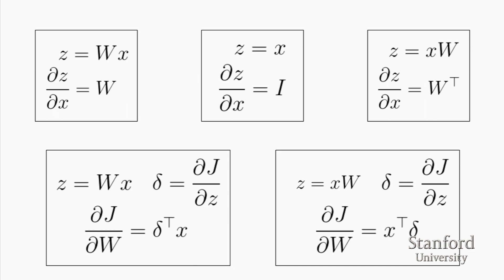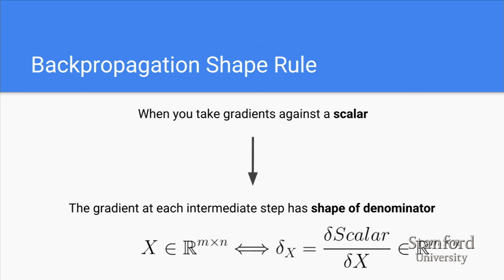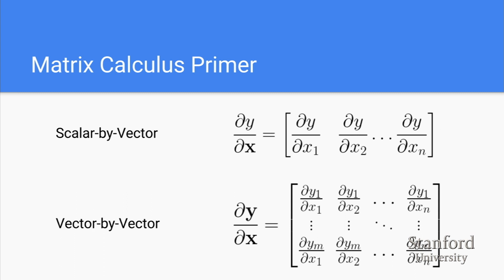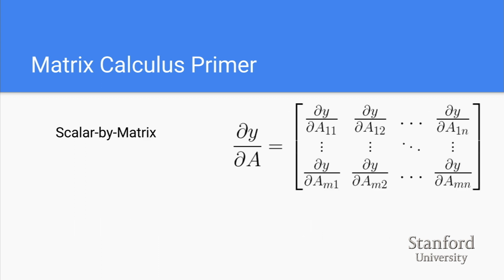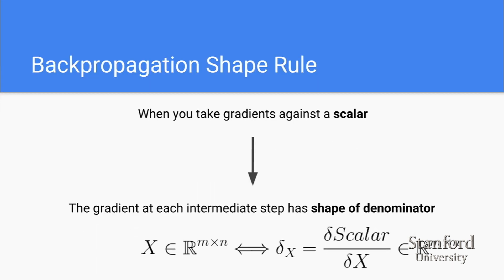A key shape rule for backpropagation: when taking the gradient of a scalar with respect to any variable, the gradient has the same shape as the denominator variable. So if x has shape n×n, then d(scalar)/dx also has shape n×n. This enables dimension balancing: if z = x*w and delta = d(loss)/dz has shape m×w, then d(loss)/dx has shape m×n, obtainable by multiplying delta by w^T in the correct order. You can solve gradient identities by ensuring dimensions balance to match the shape of the parameter.